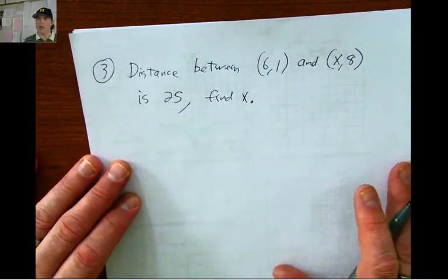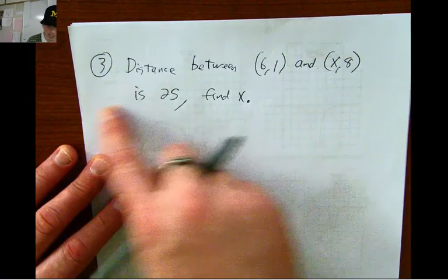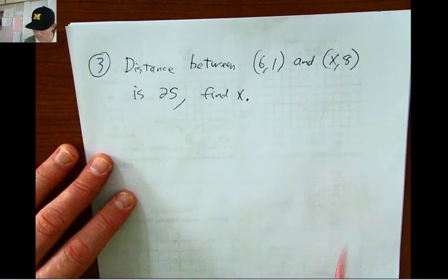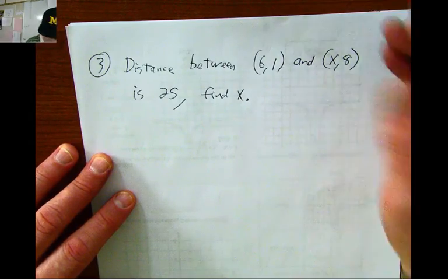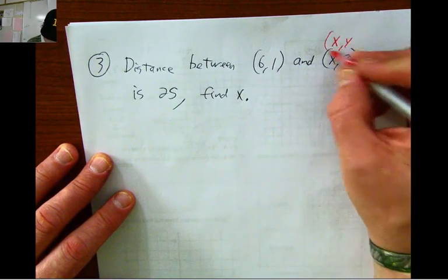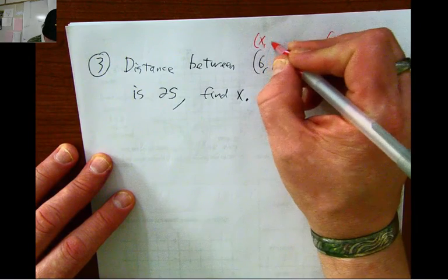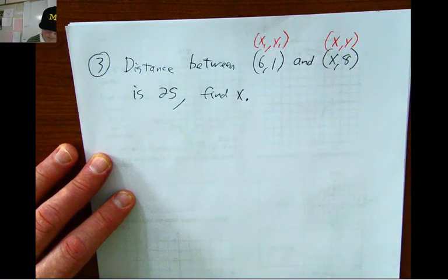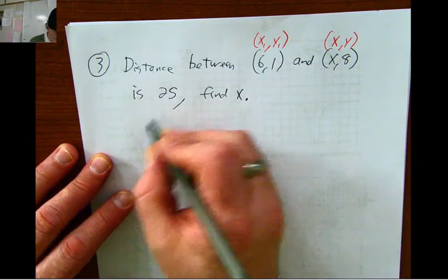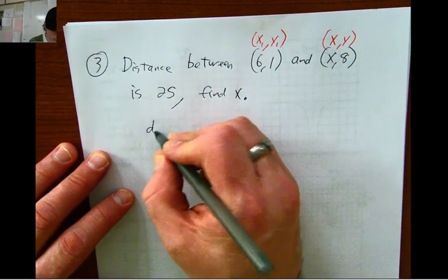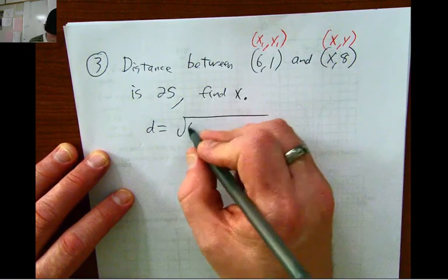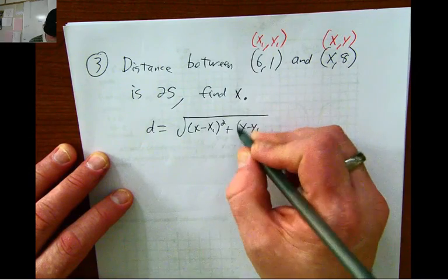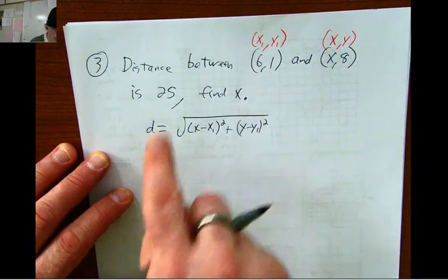So, you're going to use the distance formula and plug in all of these things, and you're going to solve for x. Because I'm looking for this x, I'm going to have this be the x, y point, and then this is going to be my x₁, y₁. So, d equals, actually, I'm going to write out the distance formula this time.